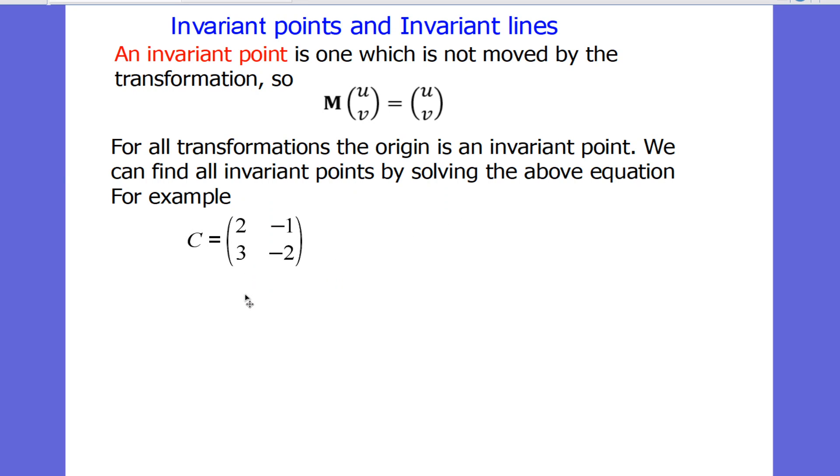Here's a simple example. Let's take the matrix C equals (2, -1; 3, -2). What we do is put it into our equation at the top here. Looking to solve this equation, we can now work out the left-hand side as a matrix product.